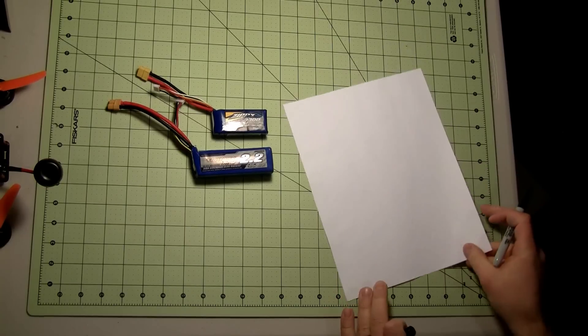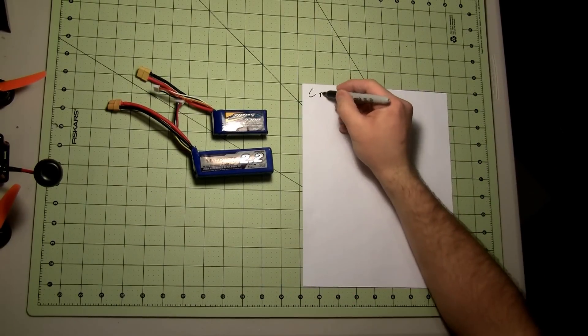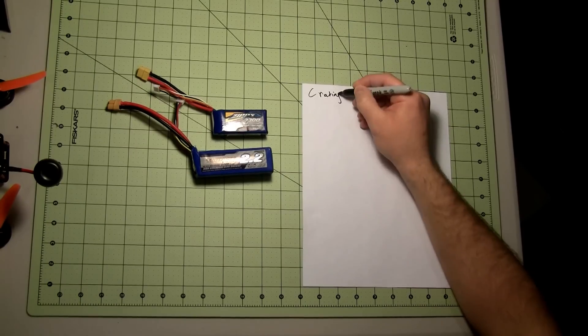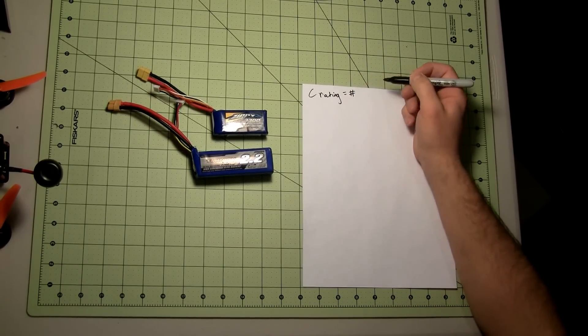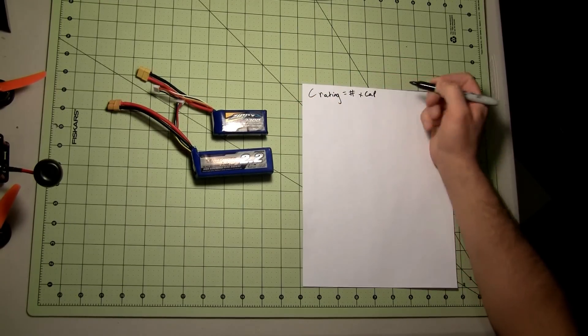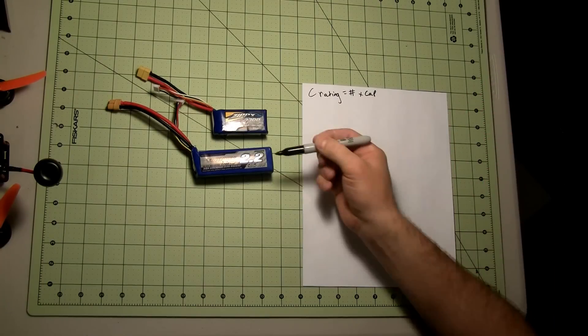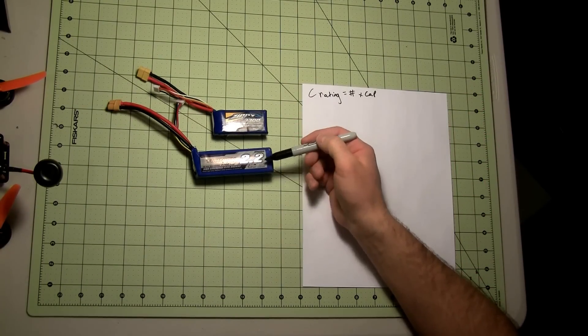The first thing we need to talk about is the C rating. The C rating equals a number, in this example 20C, times the capacity. And in this case it's done in amps. So these are 1.3 amps and 2.2 amps.